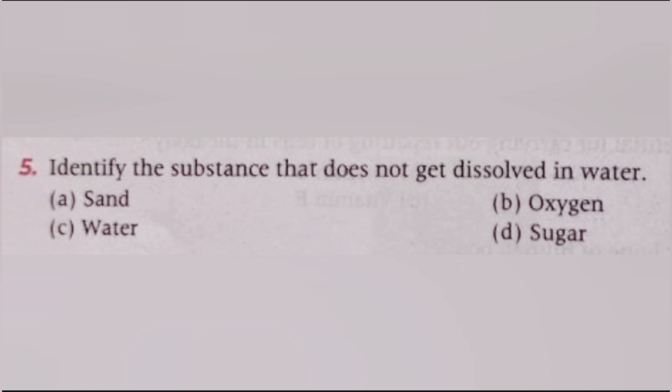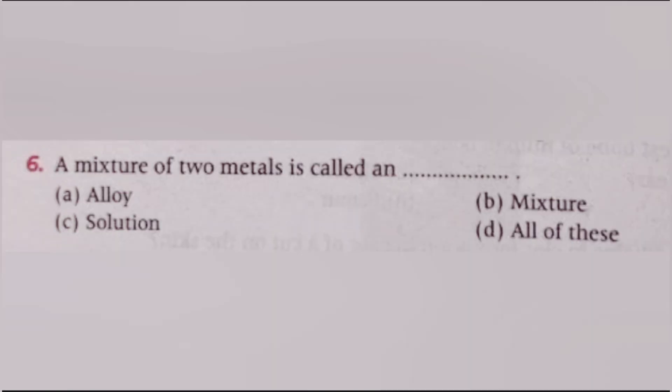Next, identify the substance that does not get dissolved in water: sand, oxygen, water, sugar. The answer is A, sand. A mixture of two metals is called: alloy, mixture, solution, all of these. The answer is A, alloy.